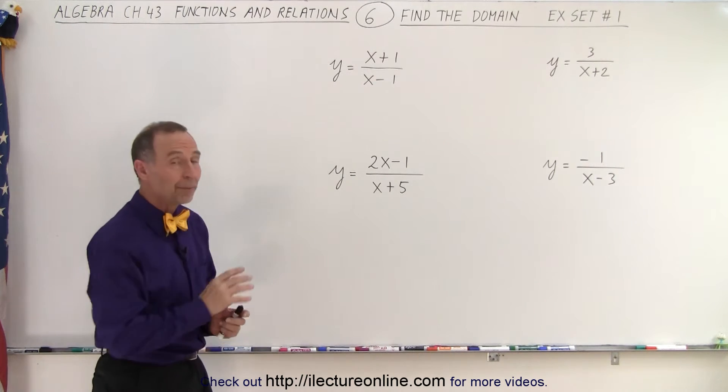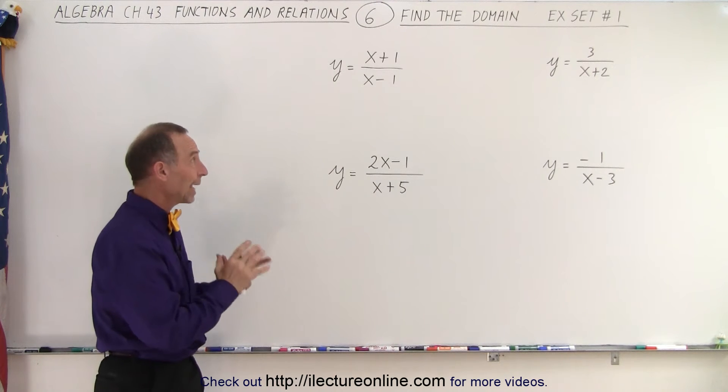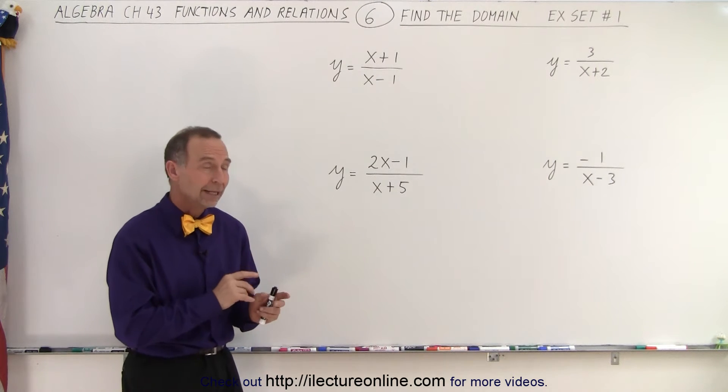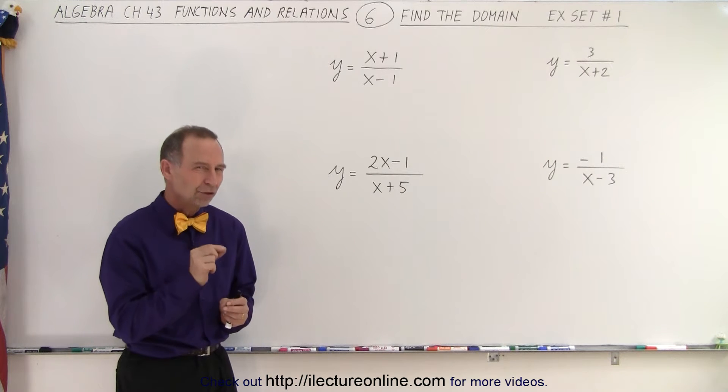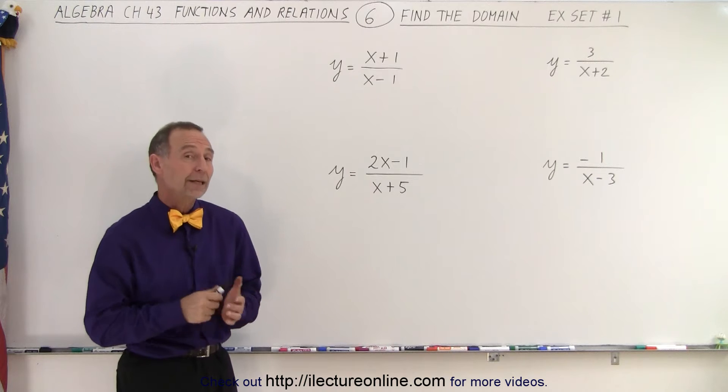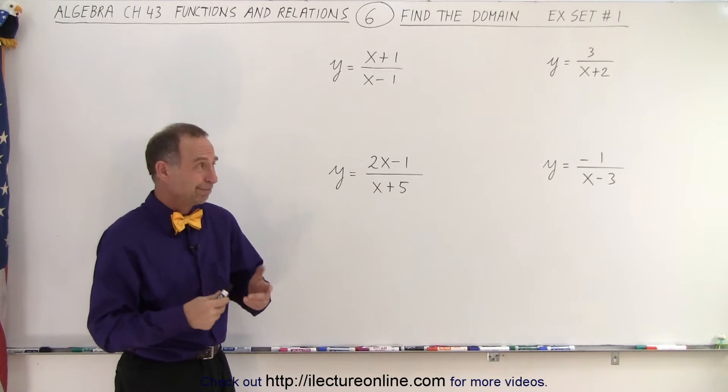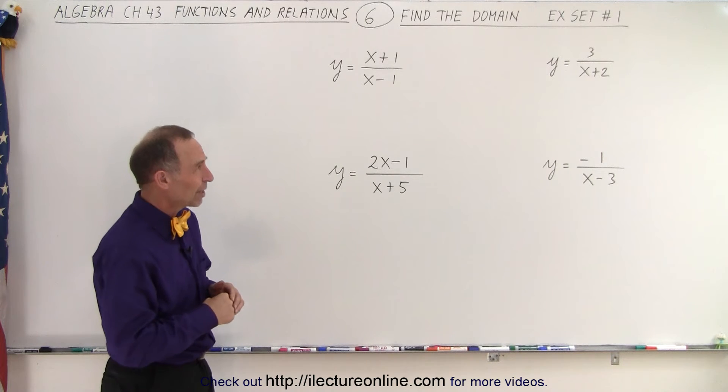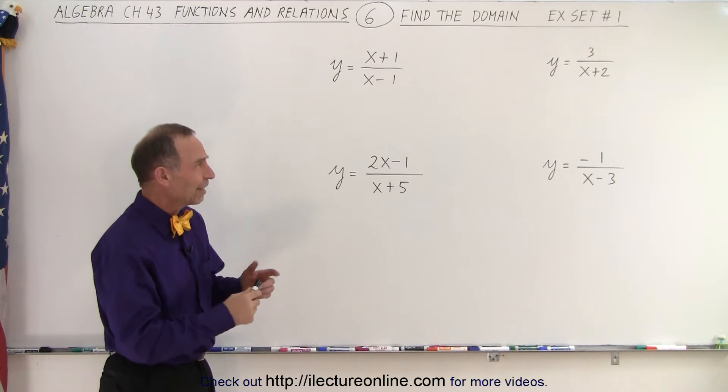Turns out these four examples here all fall in the same category. They all have a denominator. They all contain an x in the denominator. And so there's a particular value for x that would make the denominator equal to zero, which is—you cannot have that kind of situation, so we need to prevent that from happening.